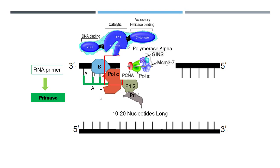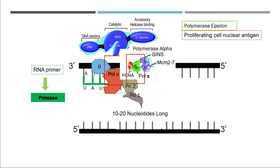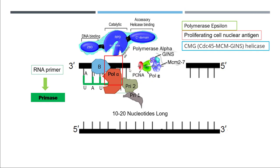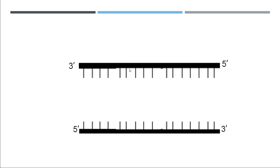Now the RNA primer is made and we need to attach DNA nucleotides to it. In eukaryotes, for the leading strand, the polymerase used is called polymerase epsilon. It also has another protein attached to it called proliferating cell nuclear antigen (PCNA), which is a clamp-like structure that keeps this group of proteins attached to the nucleotides so they don't dissociate. The blue circles in the picture represent CMG helicases, which are opening up the DNA strand. This group of proteins moves along and attaches DNA nucleotides one by one.